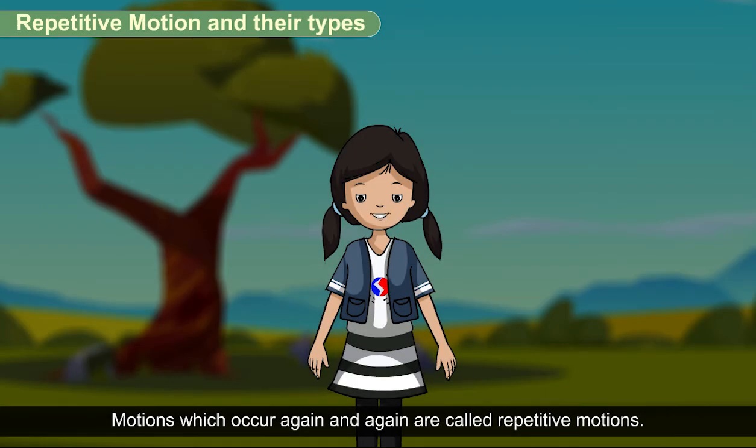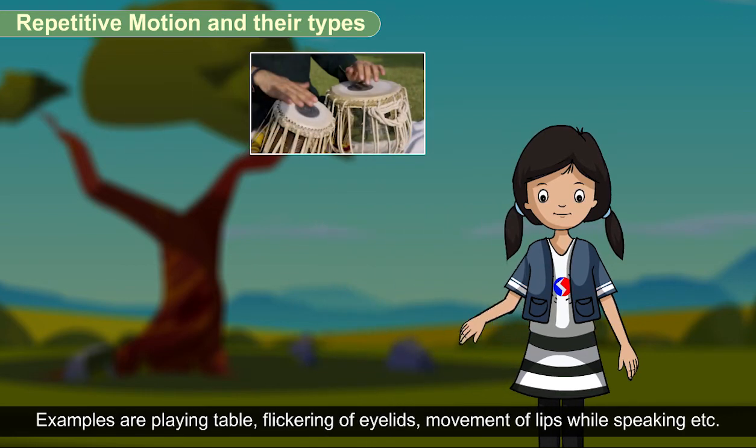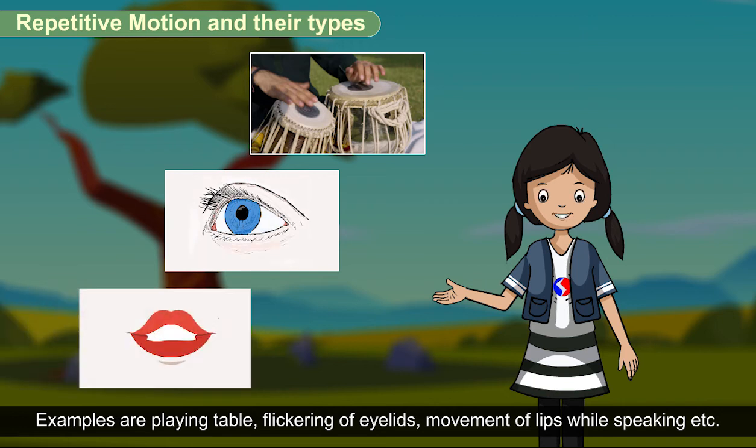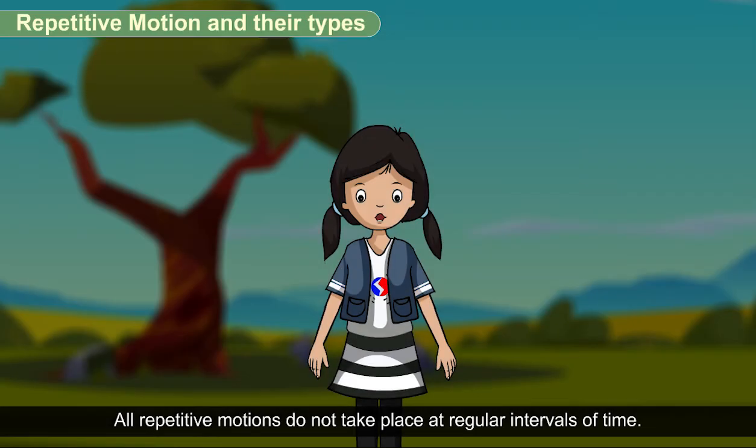Motions which occur again and again are called repetitive motions. Examples are playing tabla, flickering of eyelids, movements of lips while speaking, etc. All repetitive motions do not take place at regular intervals of time.